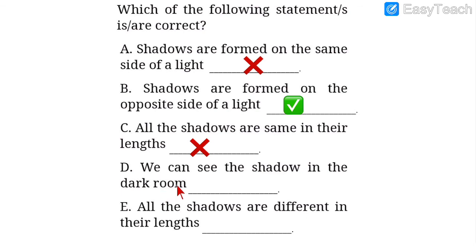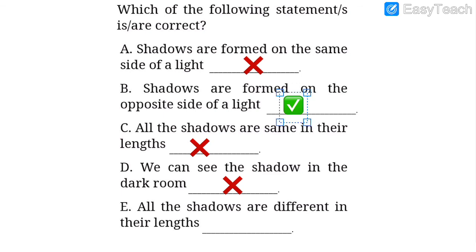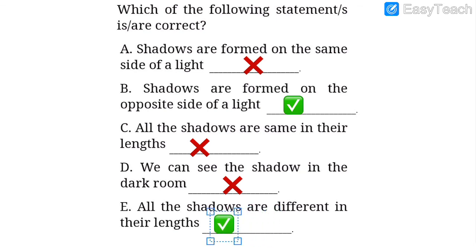Number five: all the shadows are different in their lengths — true, correct. In the morning, evening, and afternoon every time the length of the shadow changes. So all the shadows are different in their lengths. Here we completed the true or false section.